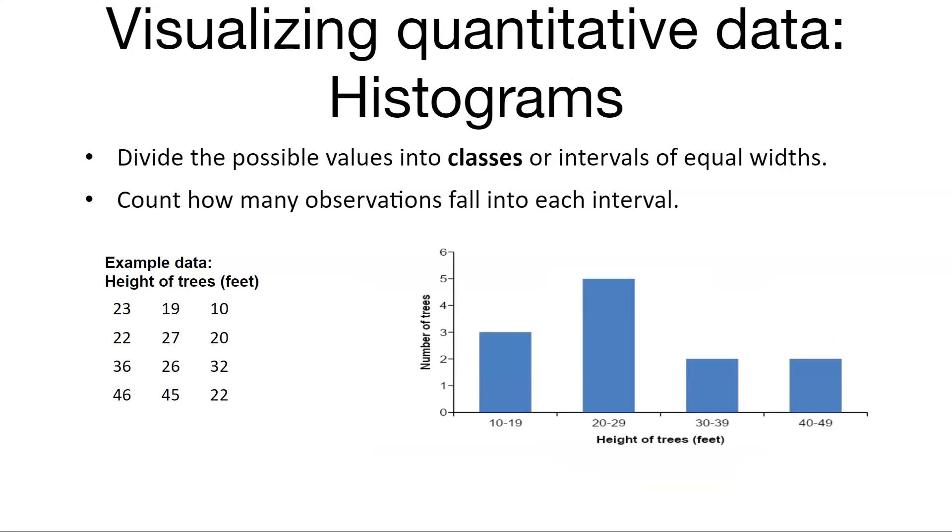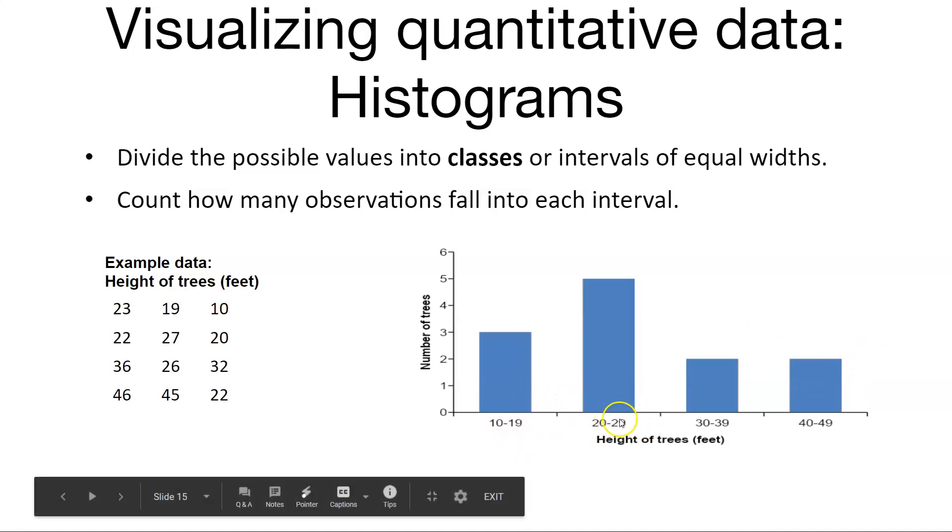To quantify or to visualize quantitative data again, we could do something like histograms. So here's where we divide the possible values into different classes or intervals. And usually those intervals are equal widths. And so again, here's a histogram of the number of trees in the various height classes going from 10 to 19 feet, 20 to 29, 30 to 39, and above 40. And so you can see again, just like the stem and leaf plot showed, most of our data are between 20 and 29 feet.